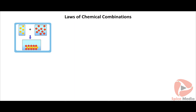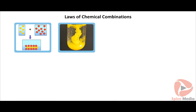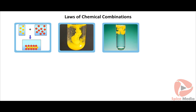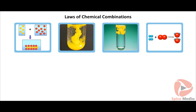Laws of chemical combination: compounds are formed by the chemical combination of reactants — atoms or molecules — which may be solid, liquid, or gaseous. Chemical combination occurs in definite proportions by weight or by volume. Based on various experiments, the laws of chemical combination were formulated, laying the foundation of stoichiometry — a branch of chemistry establishing quantitative relationships between masses of reactants and products.